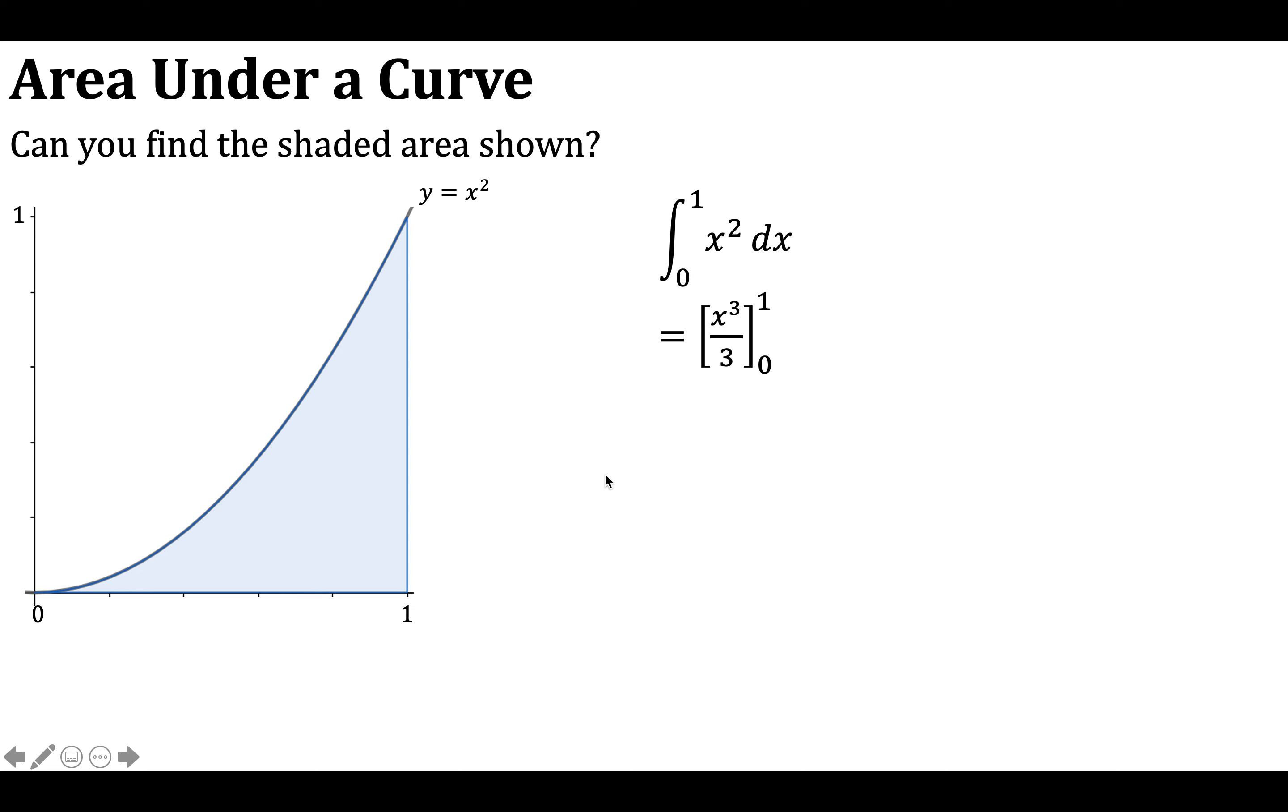So integrating, we get x cubed over 3, and our limits remember are 0 and 1. So we substitute 1 in firstly, and then we subtract the substitution of 0. We've got 1 cubed over 3 minus 0 cubed over 3. That gives us 1 third minus 0, which is 1 third.